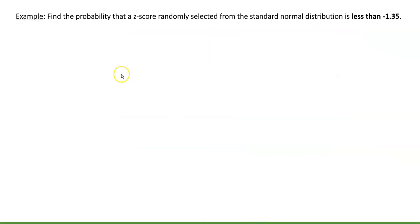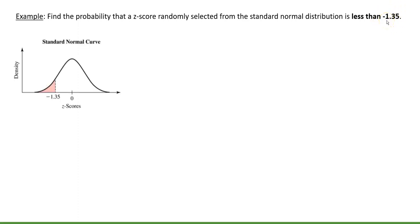Let's try an example: find the probability that a z-score randomly selected from the standard normal distribution is less than −1.35. On the picture, the horizontal axis represents z-scores with z = 0 at the center, since the mean has a z-score of zero. The value −1.35 is marked to the left, and we want the area to the left of −1.35, which is highlighted — that area represents the probability we're looking for.